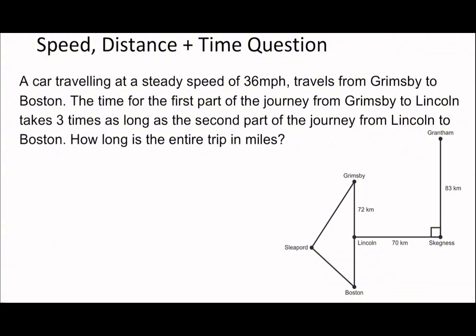Next question - I'd advise you to pause, see if you can do this question, then we'll talk through the answers. A car traveling at a steady speed of 36 mph travels from Grimsby to Boston. The time for the first part from Grimsby to Lincoln takes three times as long as the second part from Lincoln to Boston. How long is the entire trip in miles?